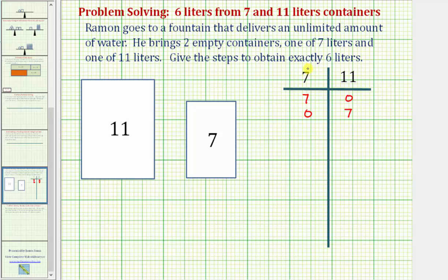Next, we're going to fill up the seven-liter container again, so we have seven liters here and seven liters here. Now we're going to fill up the eleven-liter container by pouring four of these seven liters from the seven-liter container into the eleven-liter container. That would give us three liters in the seven-liter container and eleven liters in the eleven-liter container.